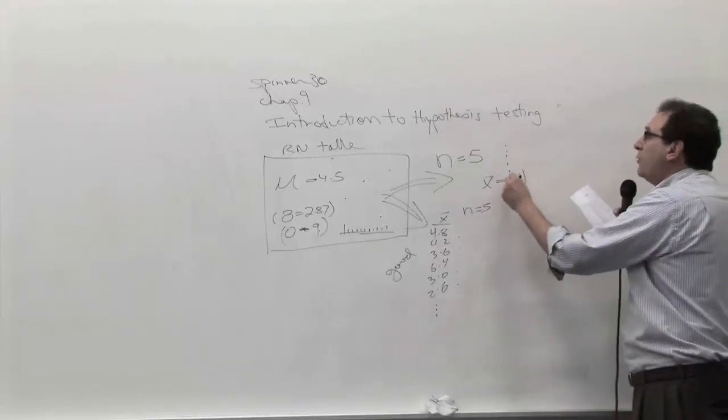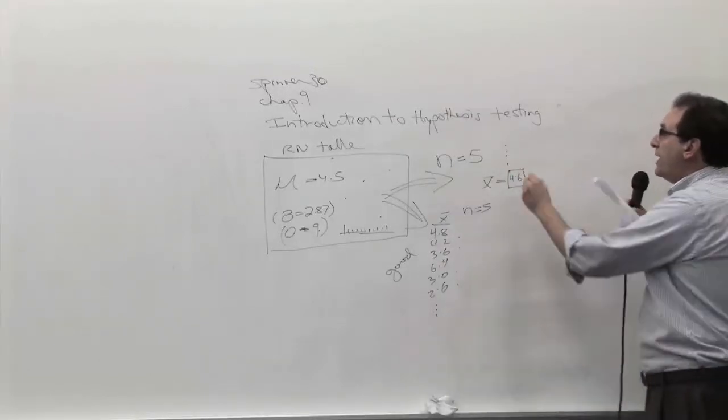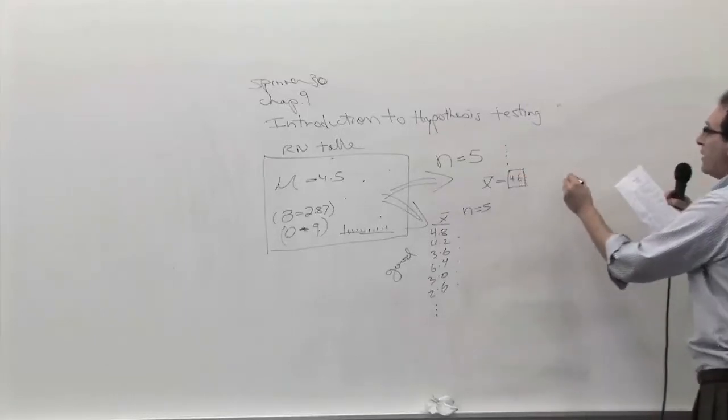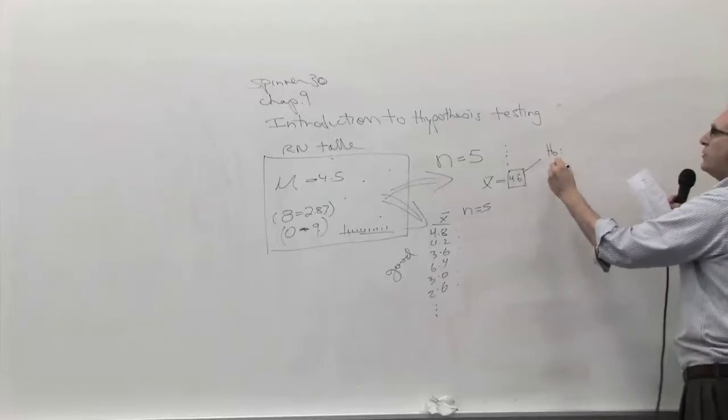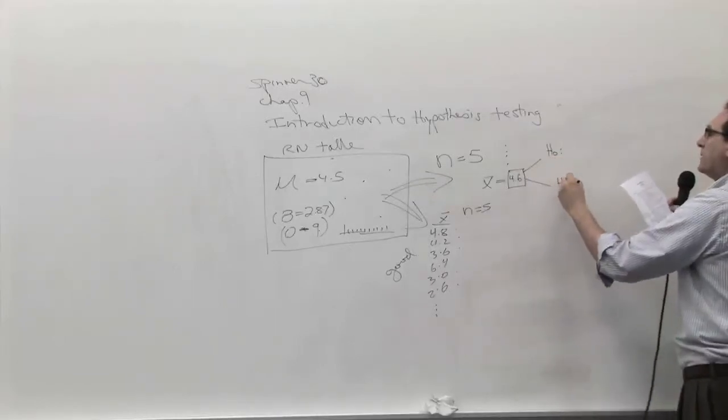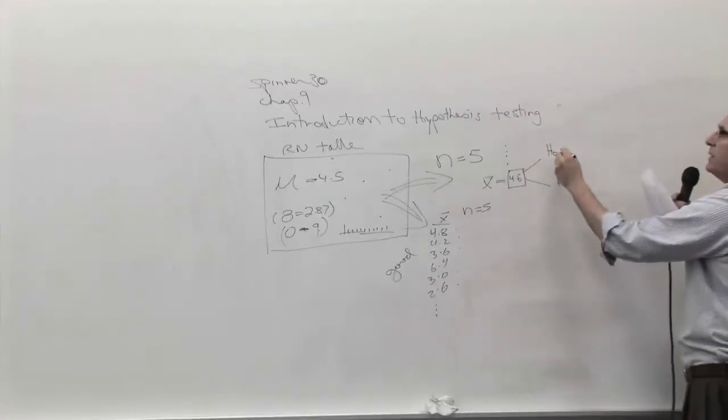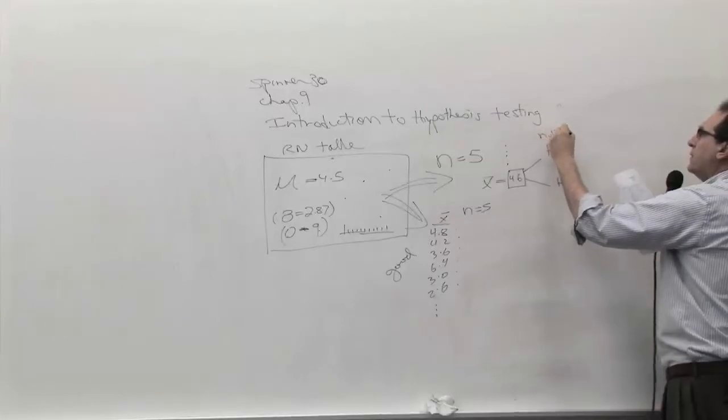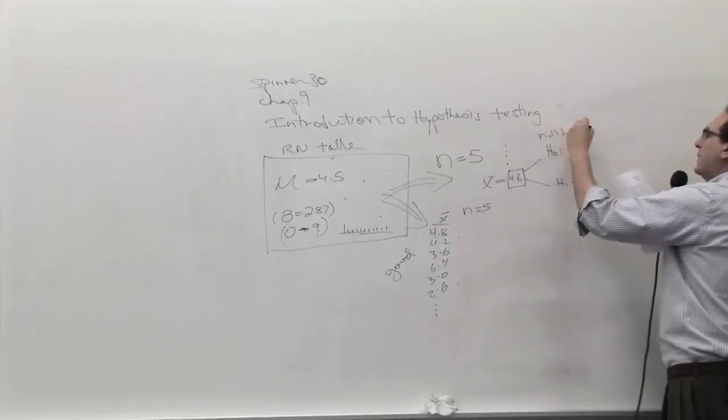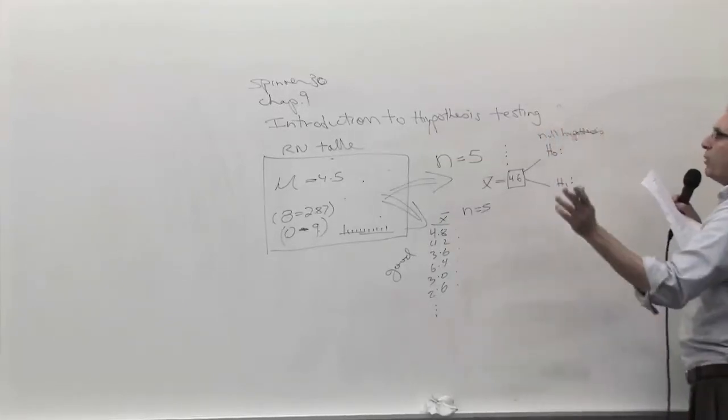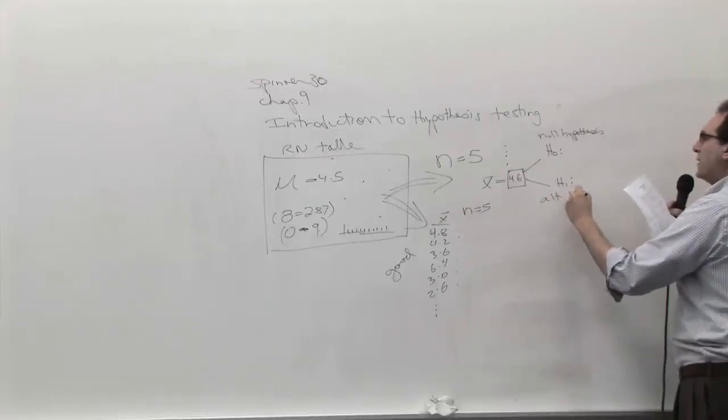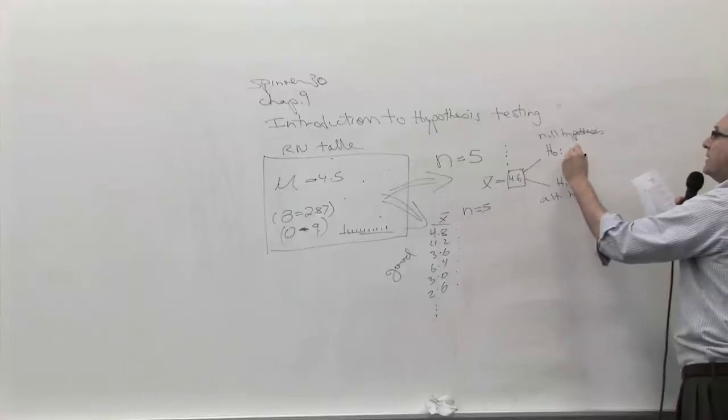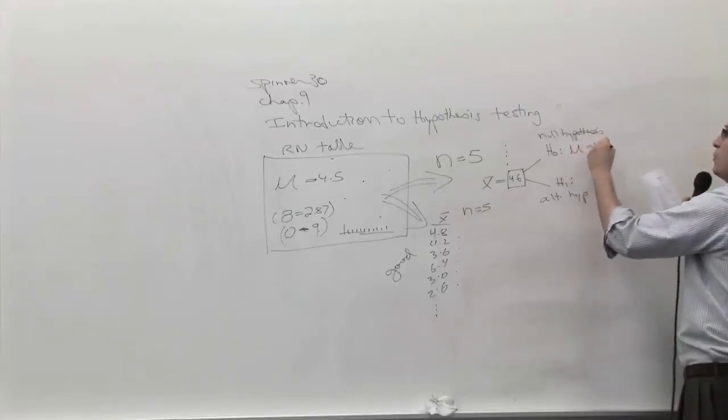So the question, the more intelligent way of answering the question, this 4.6 back up, there are two possibilities. We're going to call those, let's do that. H sub zero is called a null hypothesis, meaning it's the status quo. No problems going on. The H sub one is called the alternative hypothesis.